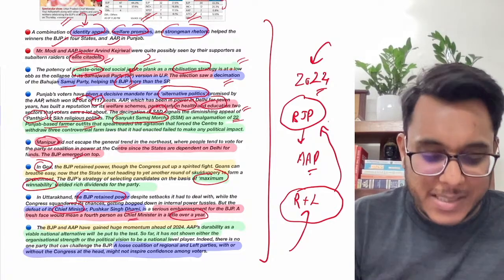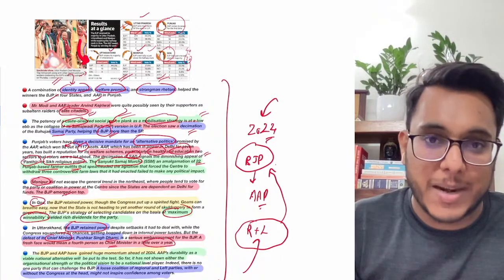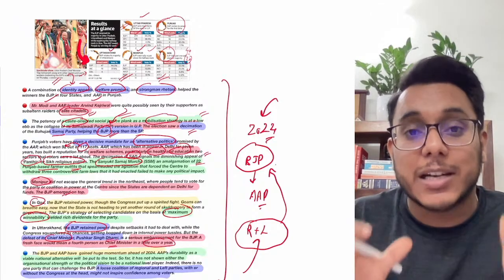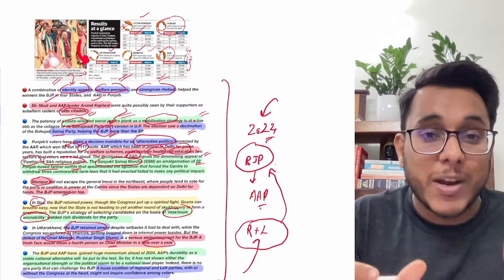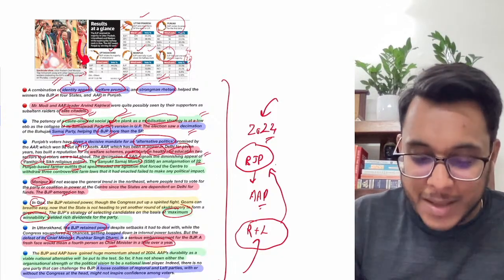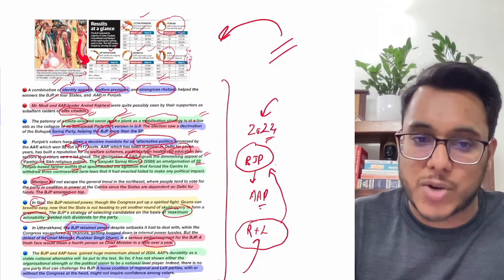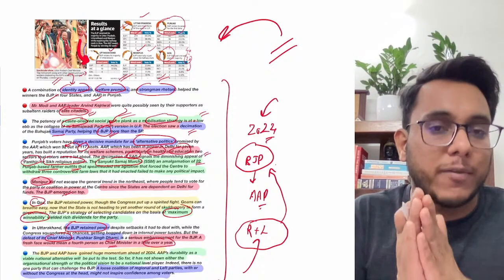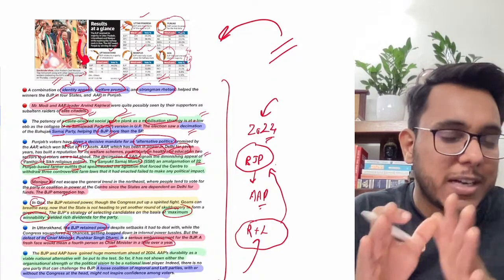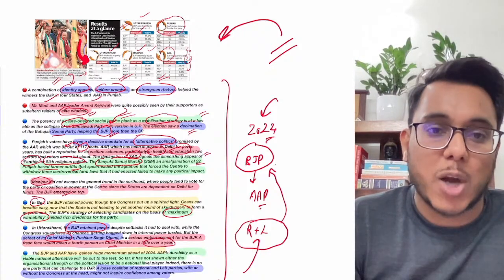A strong opposition is needed to make democracy vibrant — opposition keeps the ruling party in check and provides constructive criticism, ensuring adherence to constitutionalism, which is the bedrock of democracy. Opposition parties need to work on their strategies. This entire election overview has been discussed from an academic dimension, examining where politics is leading, not from a partisan perspective.